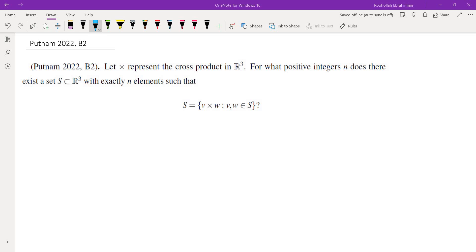Let's first understand what the question is asking us to do. The equality gives us two things. First, if V and W are in S, then V cross W is also in S. So in other words, set S is closed under cross product.